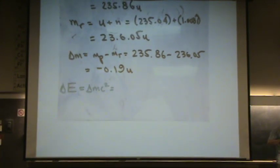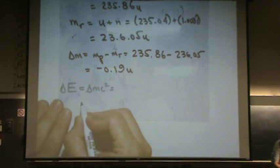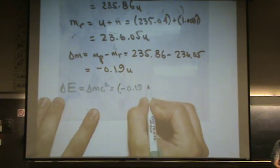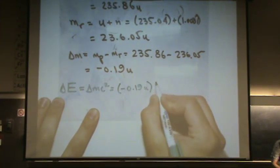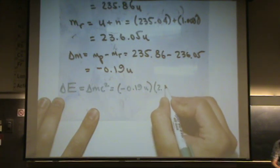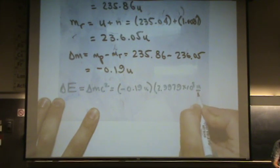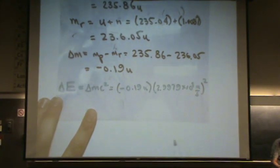So I want to plug in my numbers, and I want to convert to joules. So this is minus 0.19 u times c squared, 2.9979 times 10 to the 8 meters per second. That's just the speed of light squared.